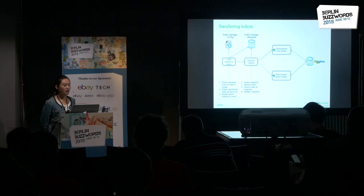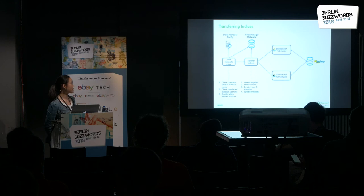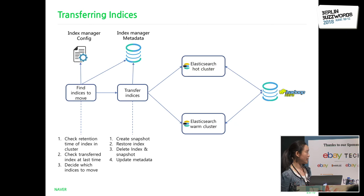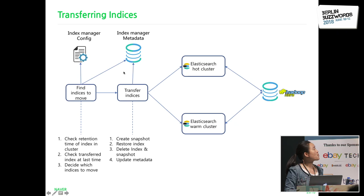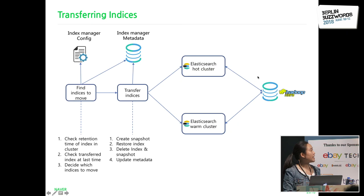This is how we transfer indexes. In our new model, for very big instances we have two clusters, each with different retention types of index configured in the index manager config file. Every time the transfer job runs, it records the last transferred index of each cluster. Next time it runs, it loads which indices need to be moved for each cluster. For each index, it creates a snapshot in HDFS, restores the index from that snapshot in the target cluster, then deletes the snapshot and the index from the source cluster, and finally updates the metadata.